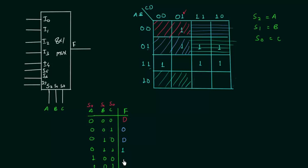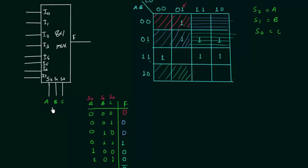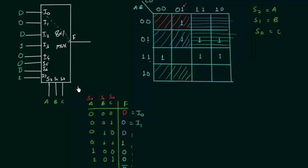Completing the remaining conditions: output for a=1, b=0, c=1 is 0; for a=1, b=1, c=0 is d complement; and for a=1, b=1, c=1 is 1. So the mux inputs are: i0=d, i1=0, i2=d, i3=1, i4=0, i5=0, i6=d complement, i7=1. This is how you implement the given Boolean function using the 8-to-1 multiplexer.